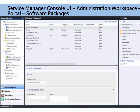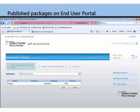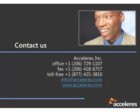Here we have an Office Live Meeting software request process. You can look at the packages — you have a number of packages, some requiring manager approval and some not. And then the result is, if you publish a package to the portal, there it is. There's Notepad — if somebody wanted to pull it down, they could as part of the request software process.